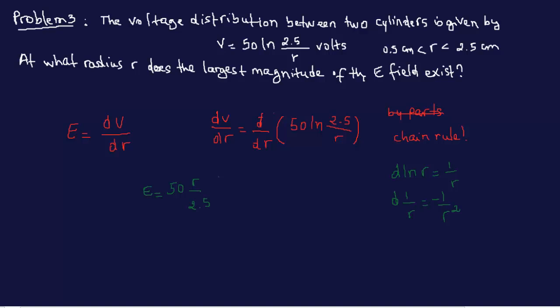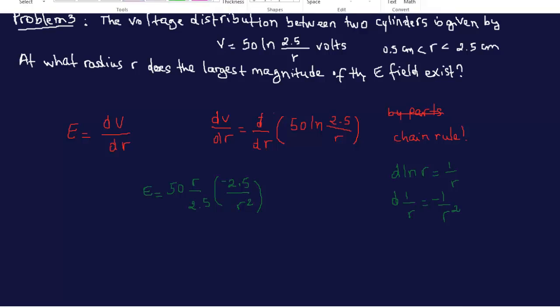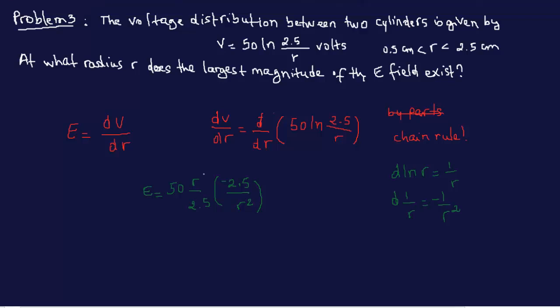We are going to take the derivative of the outside, multiply by the derivative of the inside. The derivative of the outside is ln of whatever function we have, and then from the inside is 1 over R. So we have 50 R over 2.5 times minus 2.5 over R squared. We take out 2.5 as constant, and we are left with minus 50 over R.